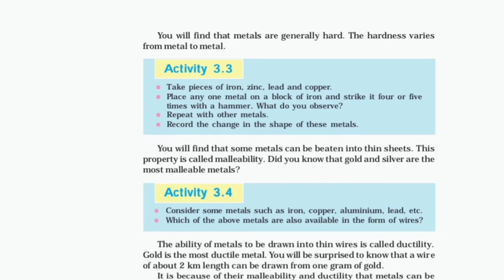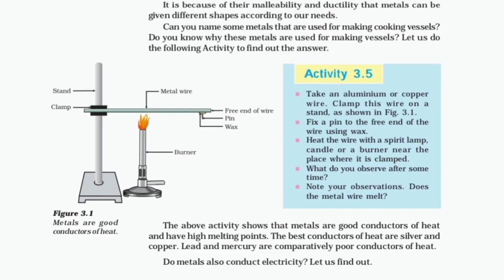Did you know that gold and silver are the most malleable metals? Activity 3.4: List the metals whose wires you have seen in daily life. The ability of metals to be drawn into thin wires is called ductility. Gold is the most ductile metal. You will be surprised to know that a wire of about 2 kilometres length can be drawn from 1 gram of gold. It is because of their malleability and ductility that metals can be given different shapes according to our needs.